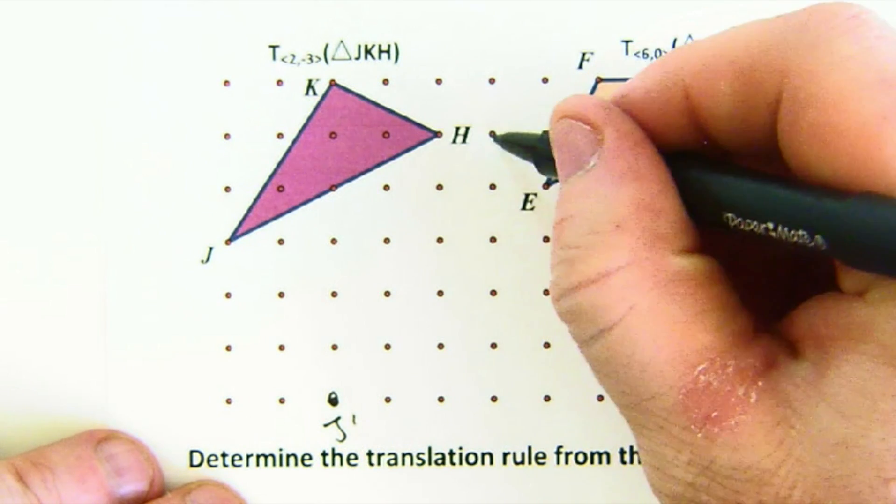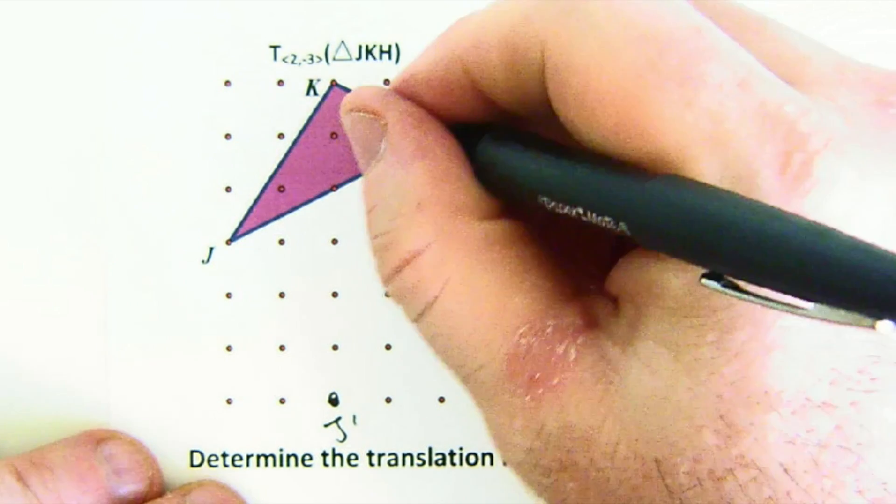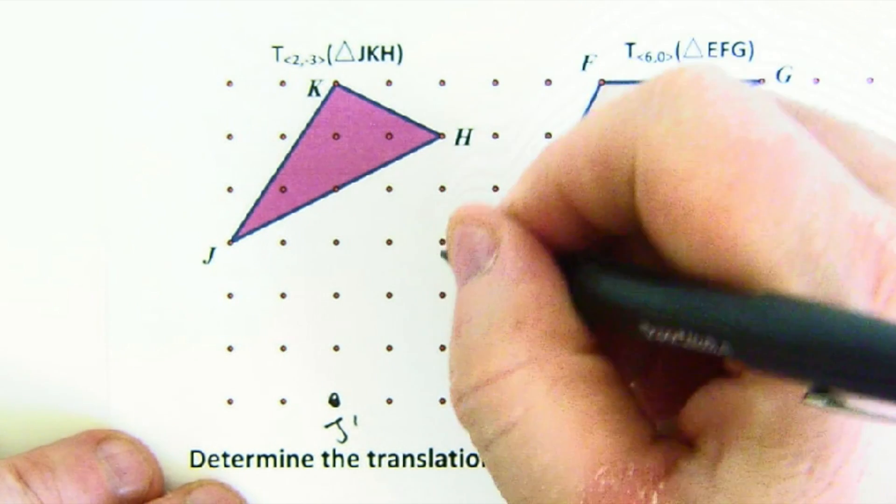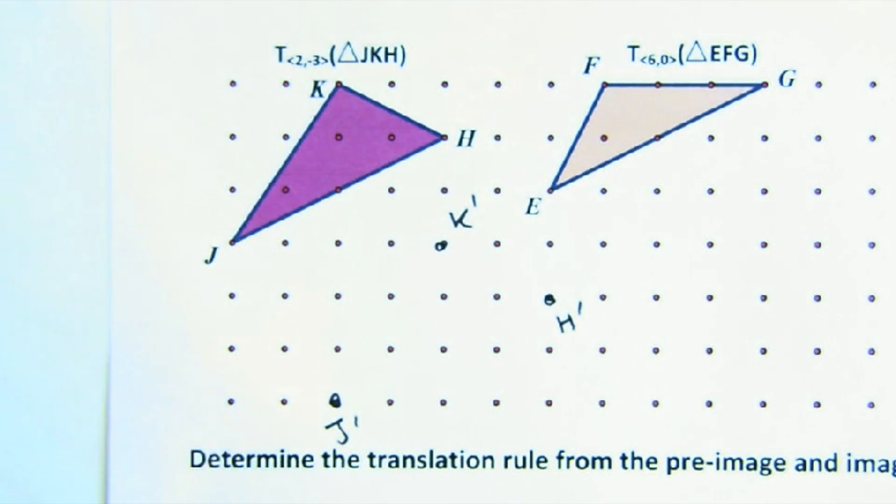2 to the right moves h, 1, 2, 1, 2, 3. Here would be h prime, 1, 2, 1, 2, 3. This would be k prime.